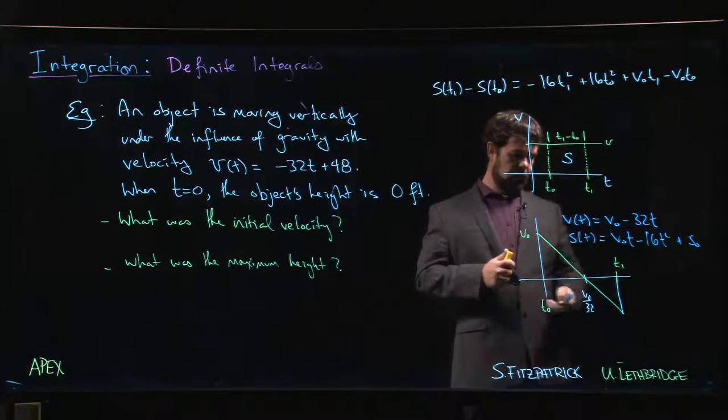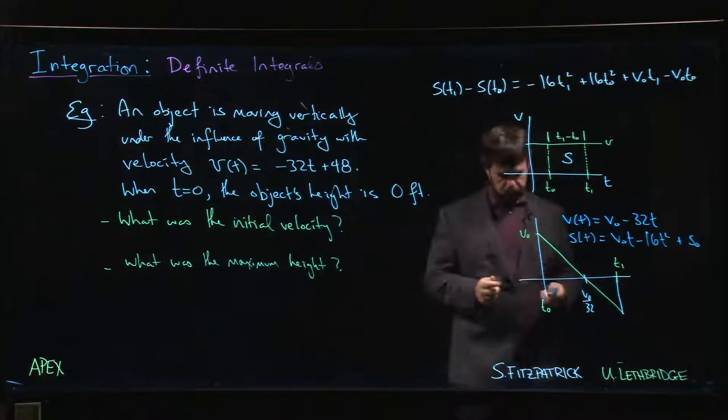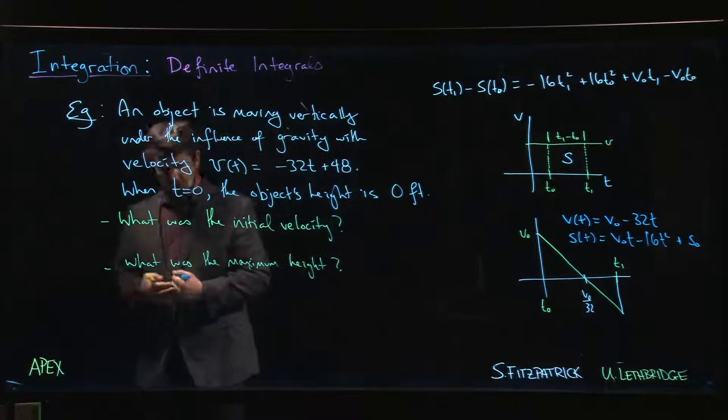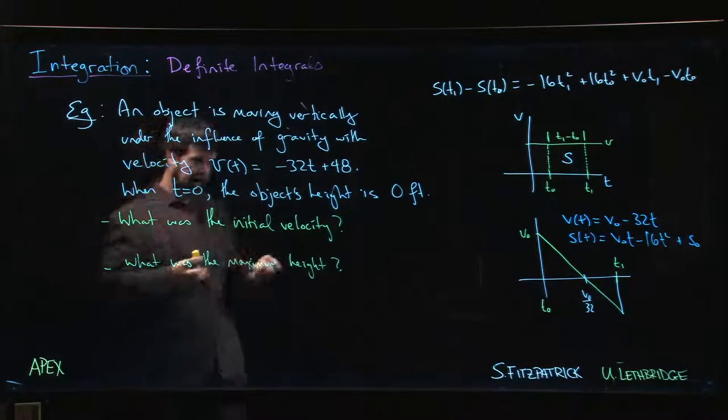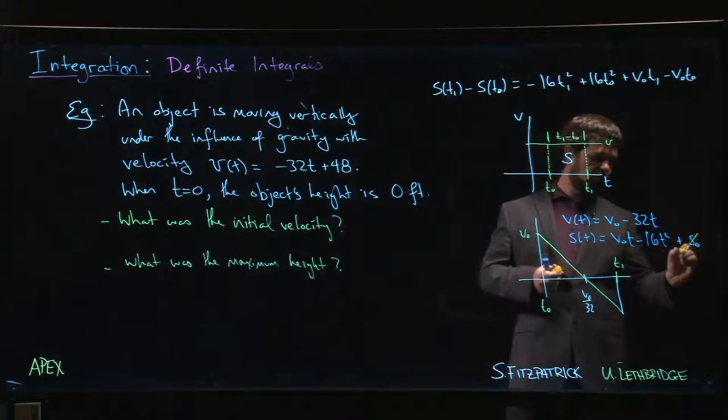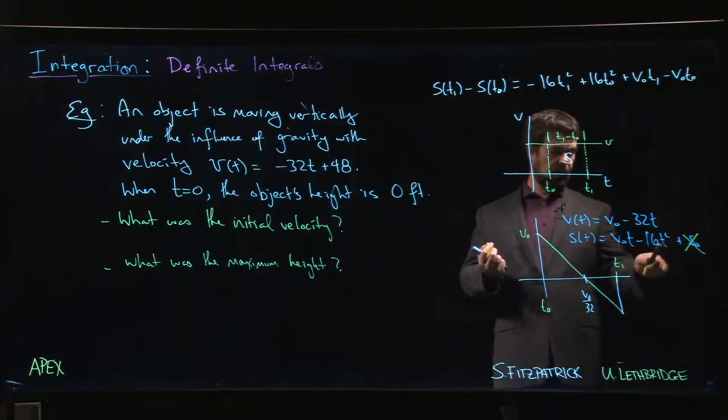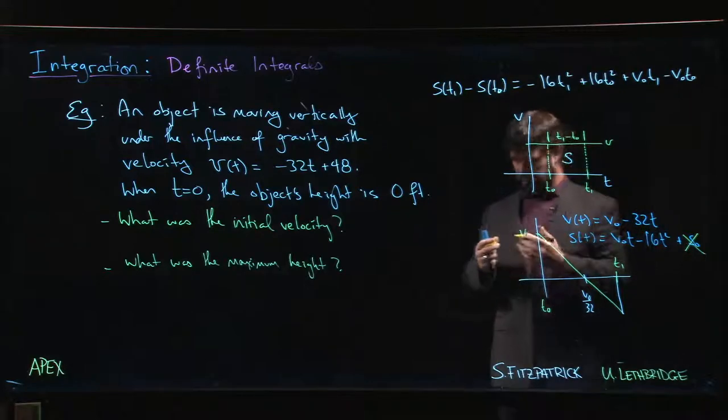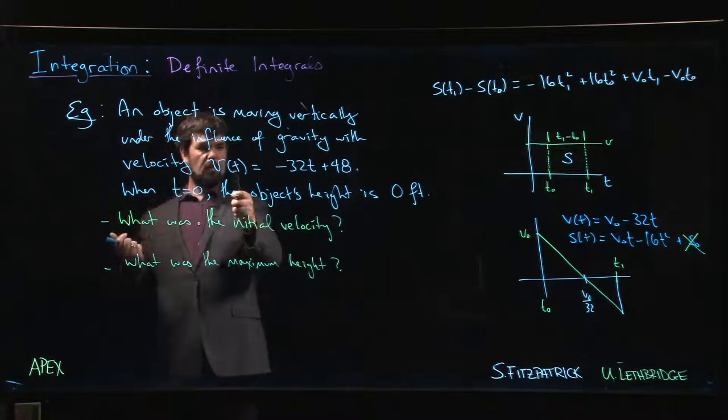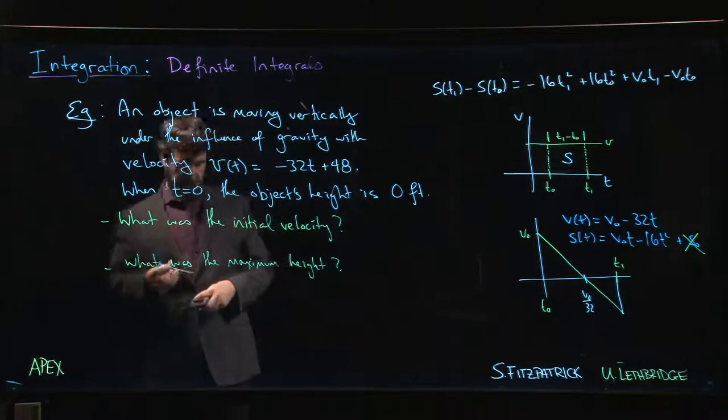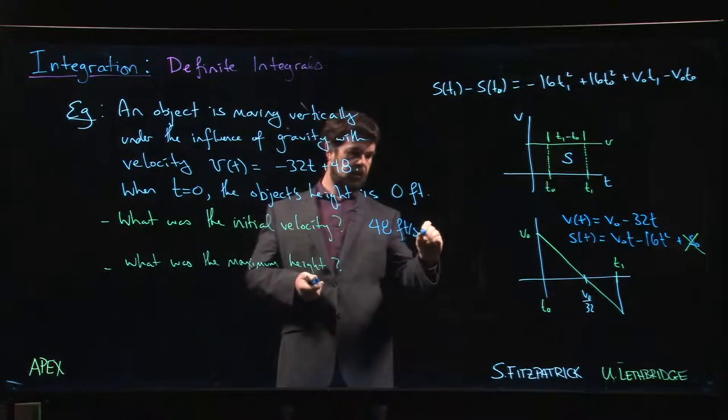Let's work through this specific situation. At time zero the object height is zero feet, so the initial position is just zero. That simplifies our position function because when I plug t equals zero, if I want s(0) to be zero, that constant must be zero. What's the initial velocity? That's your velocity when t equals zero, the constant term in your velocity function: 48 feet per second.